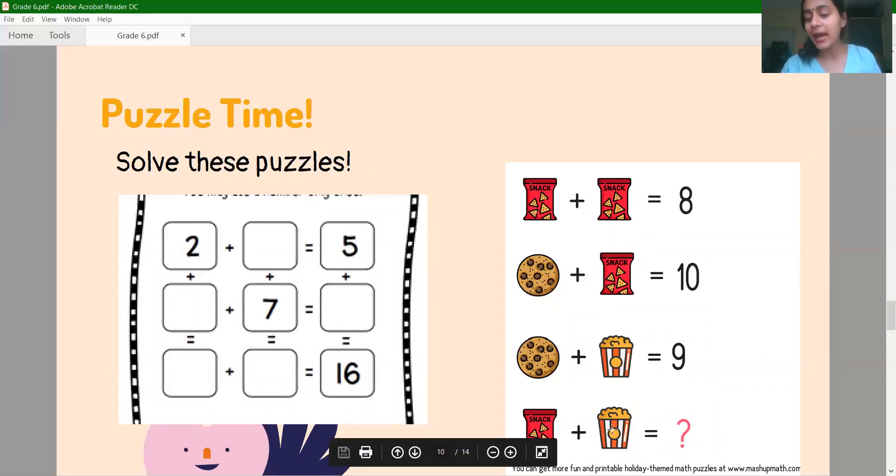And in this puzzle, you have to find the last answer. If you get two packets, it is eight. A cookie and a packet, it is ten. And a cookie and a popcorn, it is nine. Then, how do you find these two? You may think a little bit. If you don't have answers, we will help. But you will try it by yourself first.